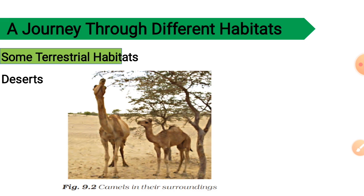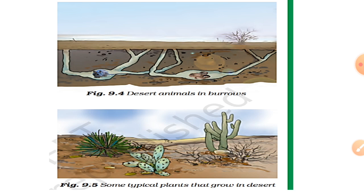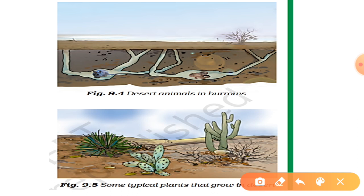Now let's move to the next animals. Here you can see two pictures representing desert animals that live in burrows. There are desert animals like rats and snakes which do not have long legs like a camel to stay away from the intense heat during the day. So what they do is get deep into burrows in the sand. These animals come out only during the night when it's cooler — this is how they protect themselves in the desert.